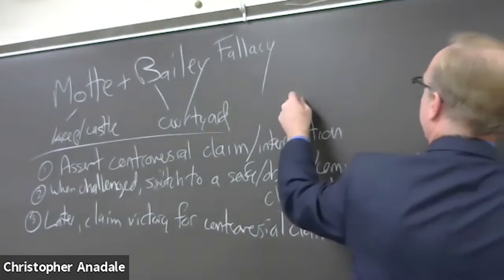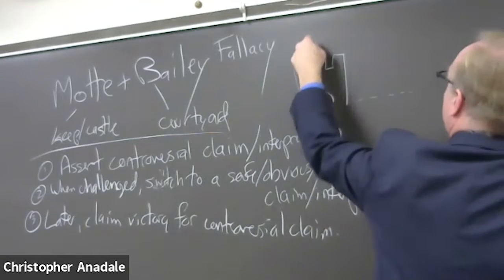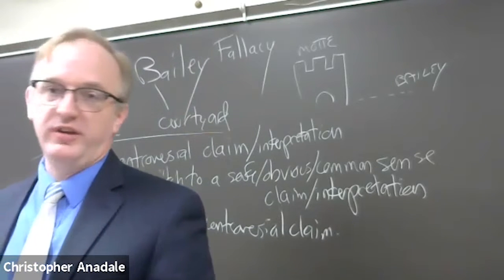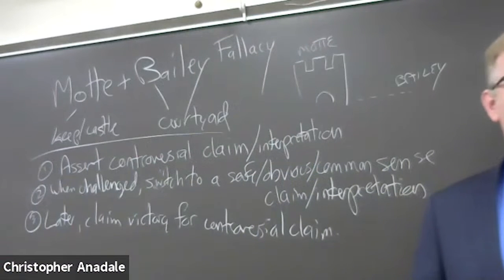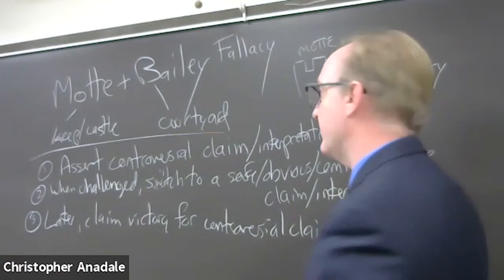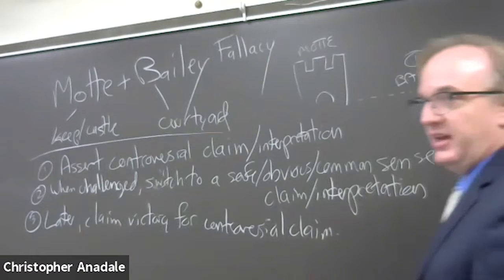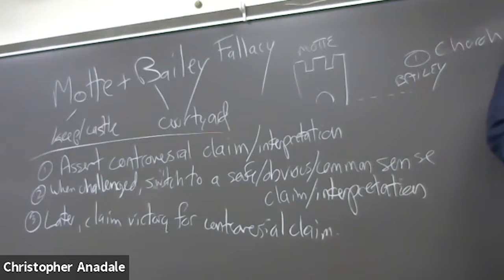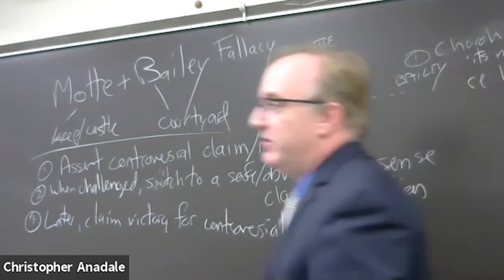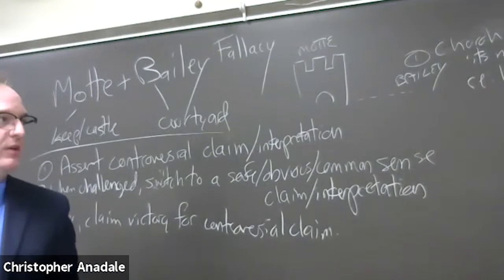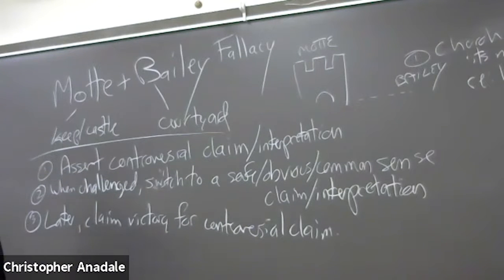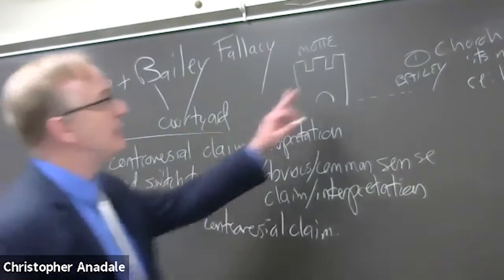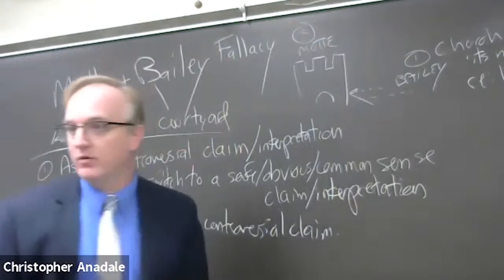What this works upon is the audience's failure to distinguish between the safe and the controversial version of the two claims being made. We'll start out making a Bailey claim in step one — some sort of radical claim — for example: 'The church has a moral obligation, in the interest of human dignity, to revise its moral theology on the issue of homosexuality.' That's plainly a Bailey claim. It's controversial. People will challenge it. When challenged, however, the arguer immediately retreats to the Mott.